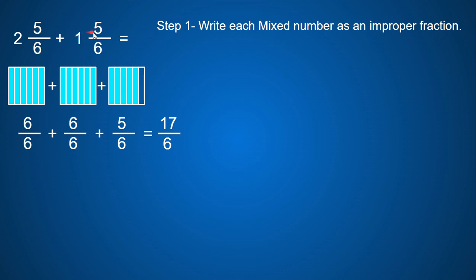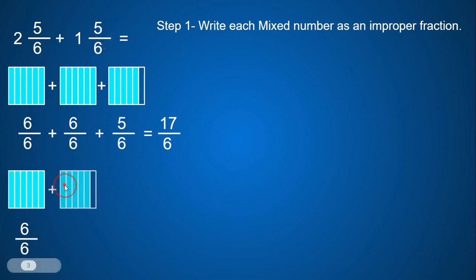And then my one and five sixths, I have one whole, which is six sixths. And then I add my five sixths onto that. So it is six sixths plus five sixths, which is going to give me eleven sixths.